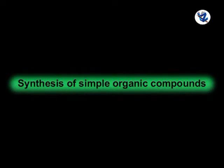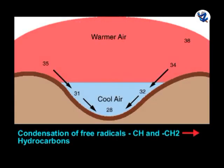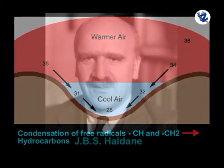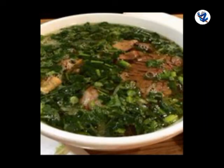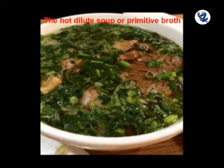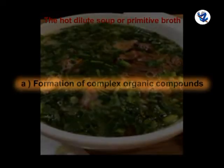The next step was the synthesis of simple organic compounds and formation of micromolecules. When the temperature of the Earth's surface considerably cooled down, the free radicals CH and CH2 condensed to form a variety of both saturated and unsaturated hydrocarbons. Haldane described the sea containing molecules of these organic substances in abundance as the hot dilute soup or primitive broth.